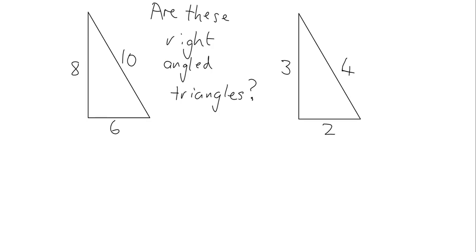One of the things Pythagoras also figured out was that it worked the opposite way around as well. We can use these ideas to tell if we've got a right-angled triangle. If the biggest side of a triangle squared equals the other side squared plus the other side squared, then you have a right-angled triangle. This is called the converse of Pythagoras, and we can use it to check whether we've got a right-angled triangle.